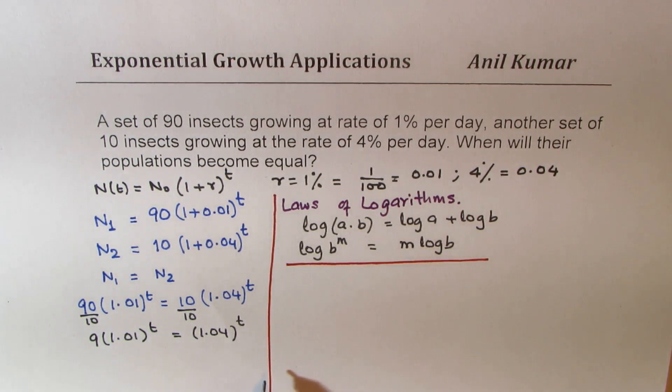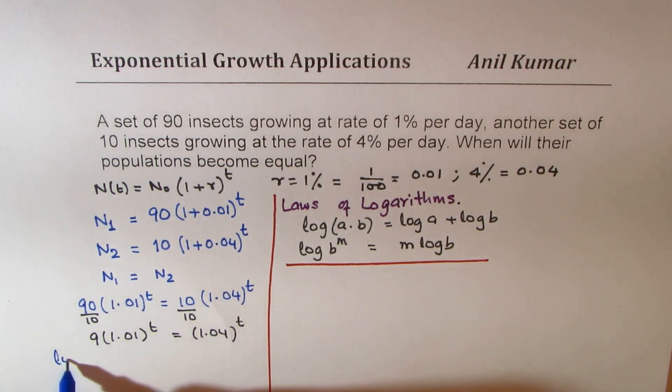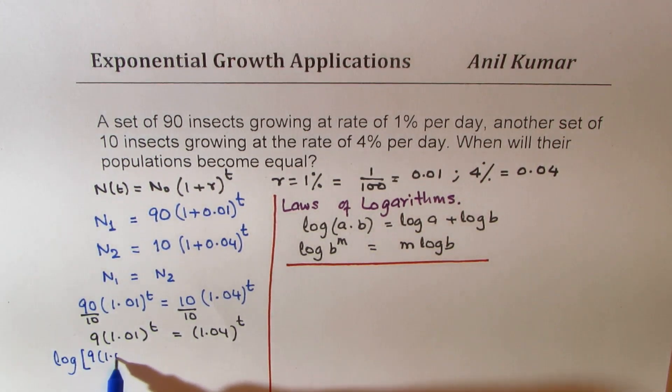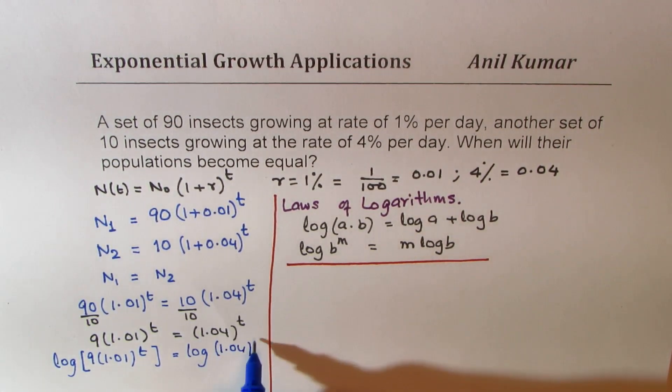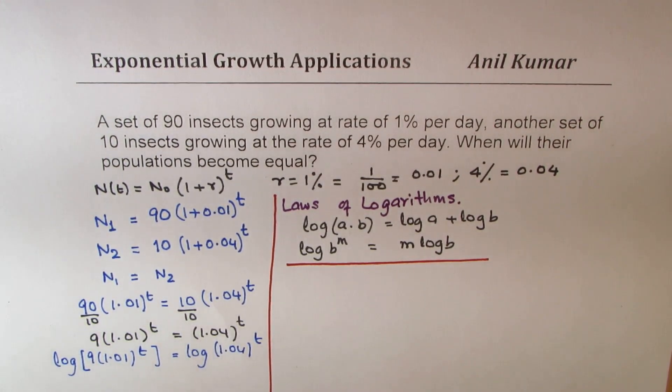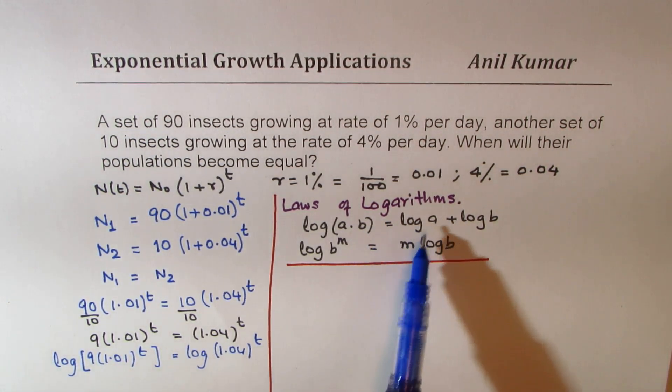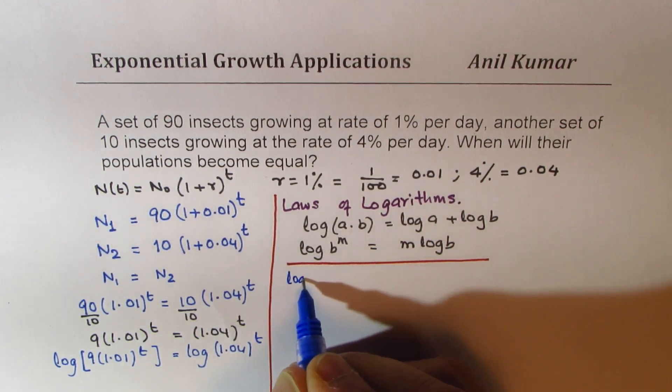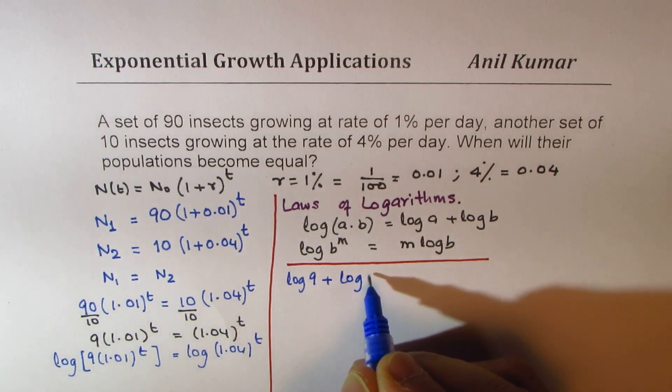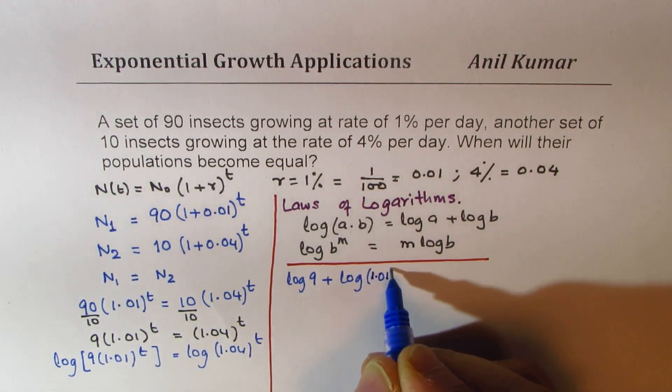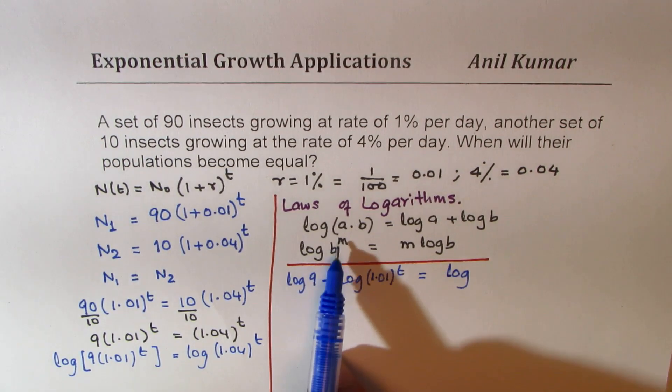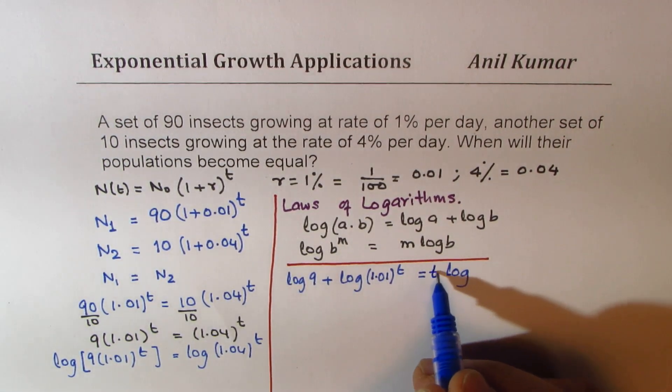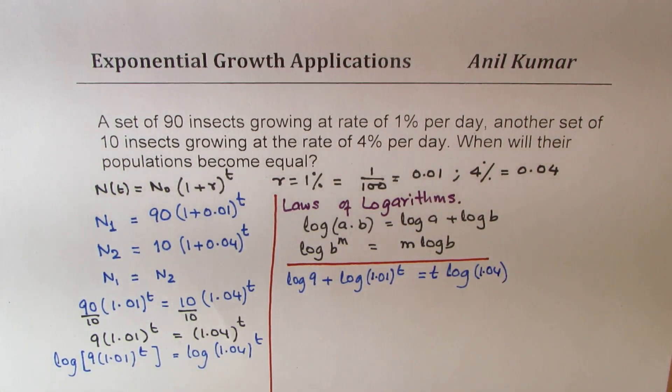So what we are going to do at this stage is take logarithms on both the sides. So log of 9 times 1.01 to the power of t equals log of 1.04 to the power of t. So taking log both sides can help us solve this particular equation. Now here you see log of 9 times something. So I'll use the first law and write this as log of 9 plus log of 1.01 to the power of t equals log of, now here I can use the power rule, b to the power of m, so I can multiply this t with log of 1.04.